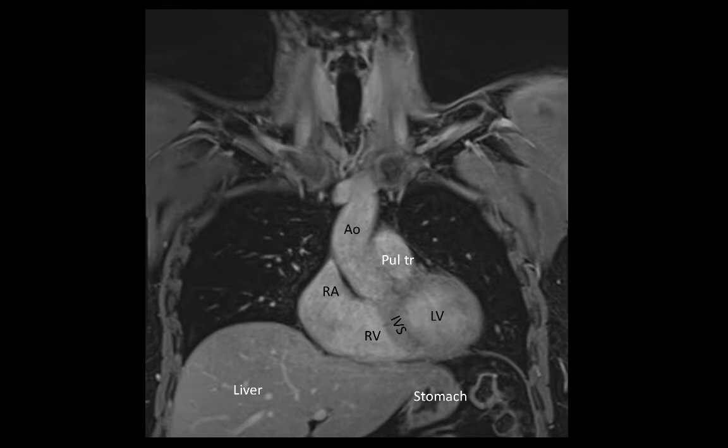We can see the left brachiocephalic vein crossing the aorta, and more superiorly we can see the lumen of the trachea.